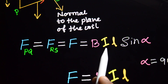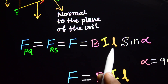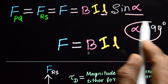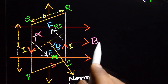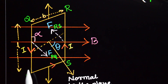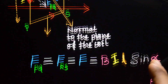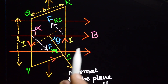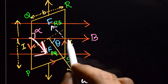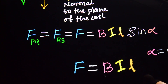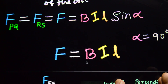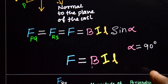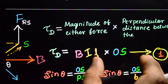The magnitude of each force is given by: F = B × i × l × sin(alpha). Here alpha is 90 degrees — the angle between the magnetic field B and the side of the loop — so sin(90°) = 1, giving F = Bil. The forces F_PQ and F_RS are equal in magnitude but opposite in direction. These two forces constitute a couple — a deflecting couple.